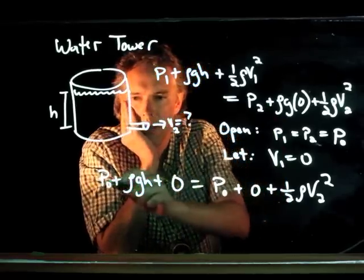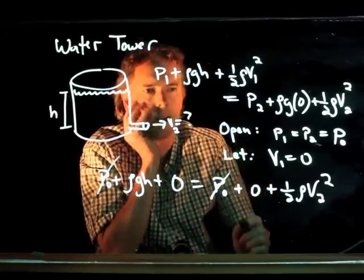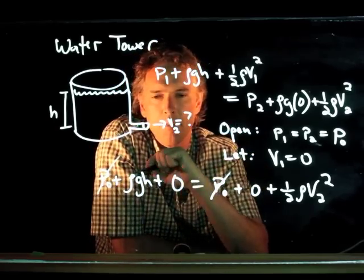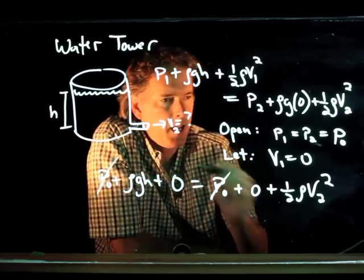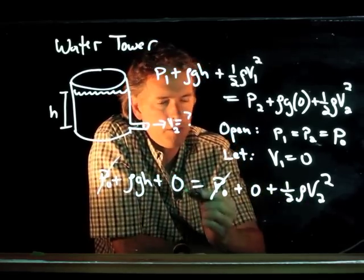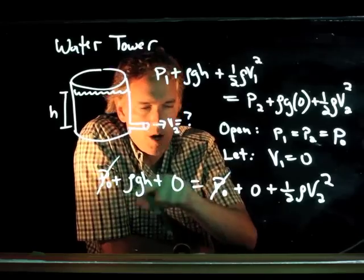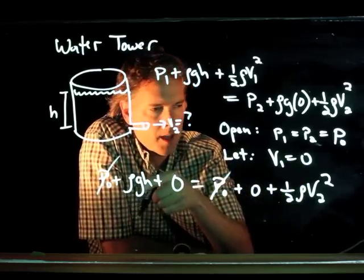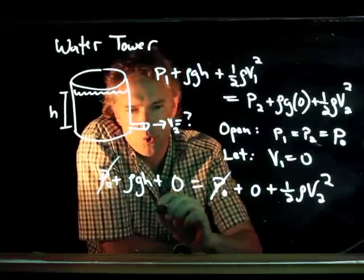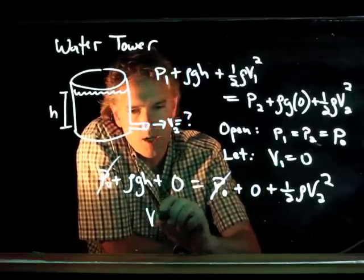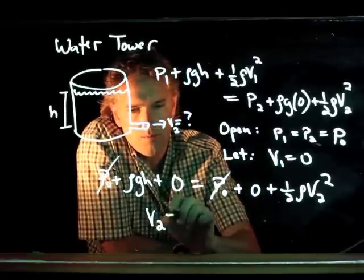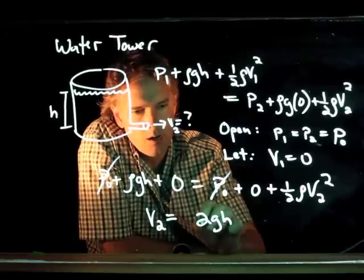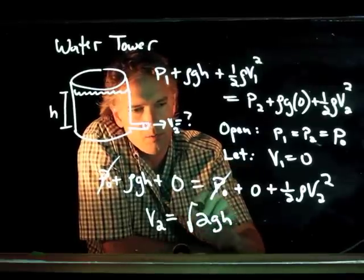Look what happens: P0 cancels with P0. Since it's open on the top and the bottom, it has the exact same pressure on both sides. And now we can solve this equation very quickly — the rho cancels out. Multiplying by 2, we get V2 equals the square root of 2gh.